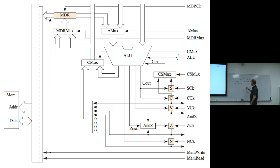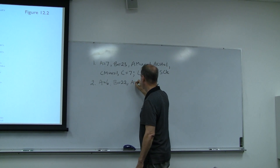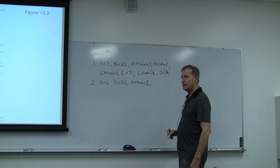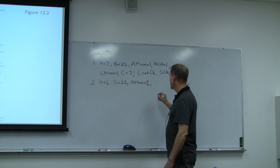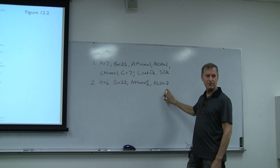AMUX equals 1, because the data goes through the A bus side. For the ALU function, we look up the table — function 2 is A plus B plus Cn, the add-with-carry function. So ALU equals 2 because we need the carry in from the shadow carry. Then CMUX equals 1.